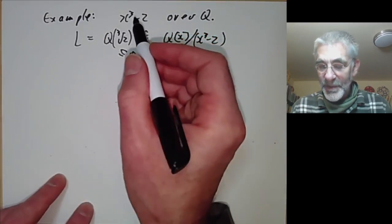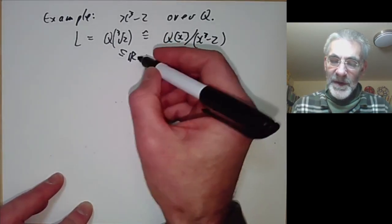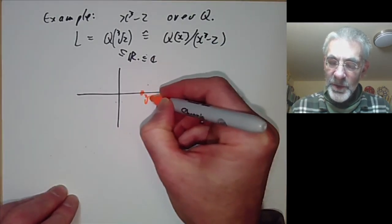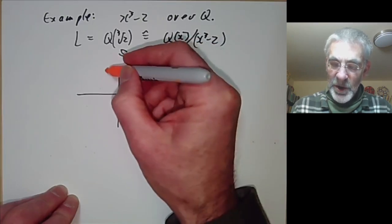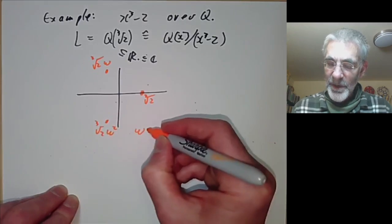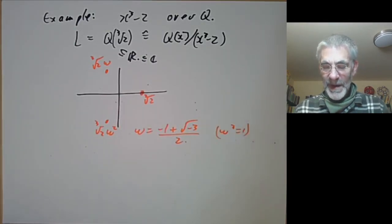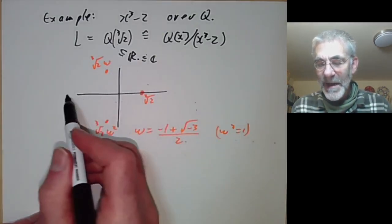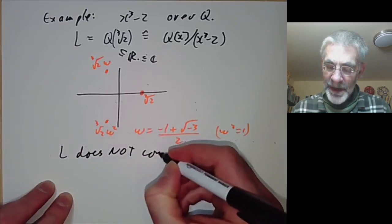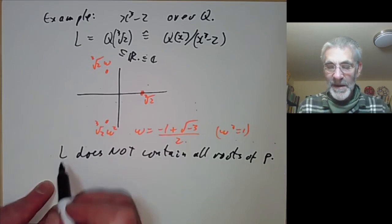L contains one root of this polynomial. What about the other roots? It doesn't contain the other roots, because if you think of ℝ as contained in the complex numbers, you can see where the other roots are. One root is the cube root of 2; the other two are the cube root of 2 times a primitive cube root of unity ω, and the cube root of 2 times ω², where ω = (−1 + √−3)/2. Since L is contained in the reals, it cannot possibly contain these two complex roots. So L does not contain all roots of p — in other words, p doesn't factorise into linear factors over L.